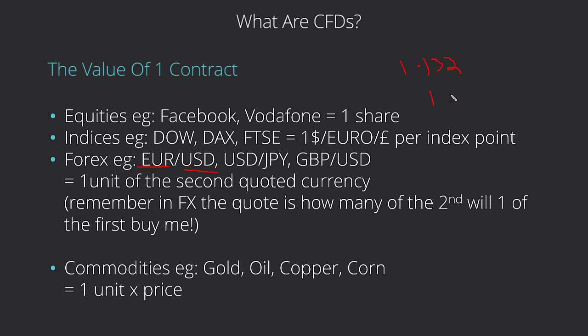With GBP/USD at 1.5, it's saying that one pound will buy you 1.5 dollars. With USD/JPY, one US dollar will buy you, say, 110 Japanese yen. So one unit of a contract is one unit of the second currency. For example, if you buy one contract of GBP/USD you are effectively buying one pound's worth of US dollars at that rate. Your position is always valued in the second quoted currency.